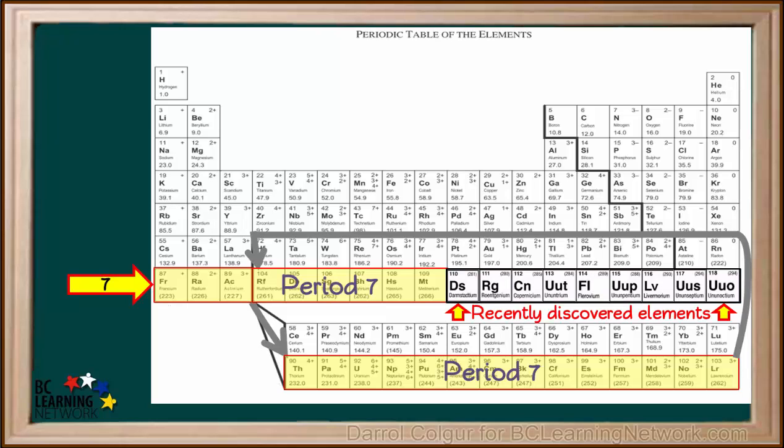Because of their position, you can see that they too would belong to Period 7. If we counted all the elements shaded in yellow, we would see that Period 7 would contain 32 elements.